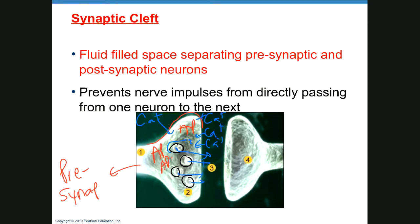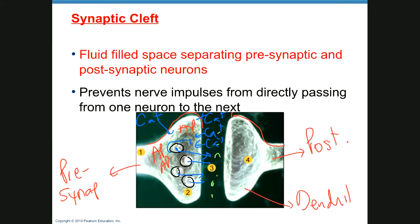The neurotransmitter is released into the synaptic cleft. The postsynaptic neuron — in this case a dendrite — has receptors for the neurotransmitter. The neurotransmitter binds to the receptors, causing ion channels to open, and ions move in or out of the cell depending on the type of channel opened. Those are the events that happen at a synapse.